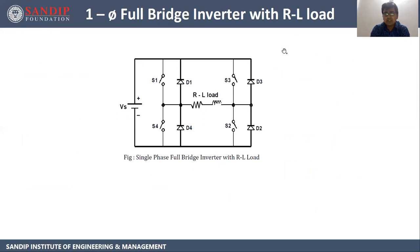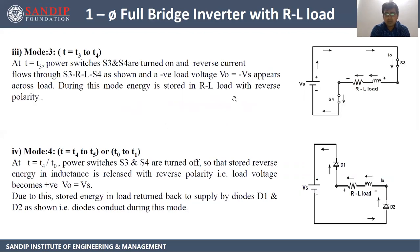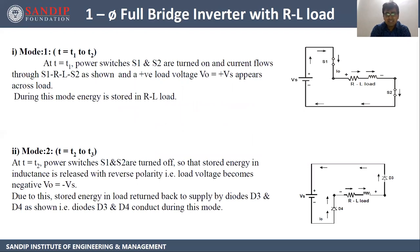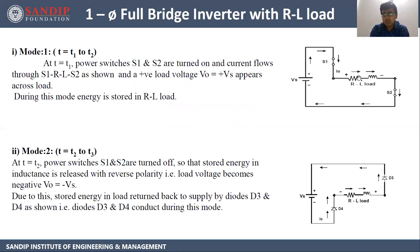Next is the single phase full bridge inverter with inductive load. The circuit diagram consists of four power MOSFETs or IGBTs along with four diodes D1, D2, D3, and D4. The load is an RL load and the input is a DC source. This circuit works in four modes. In Mode 1, switches S1 and S2 are closed; current flows from Vs positive → S1 → RL load → S2 → Vs negative. We get the output across the inductive load and the inductor stores energy.